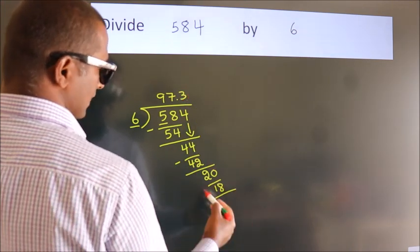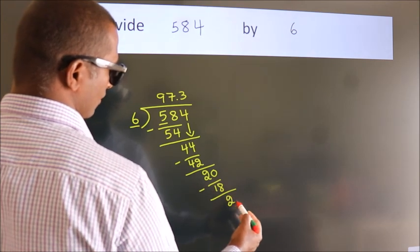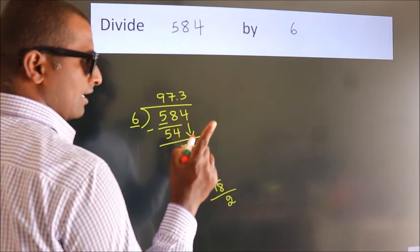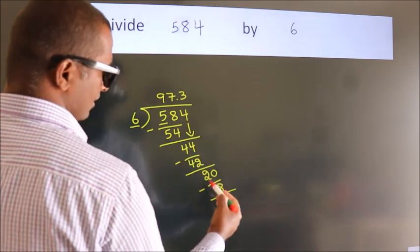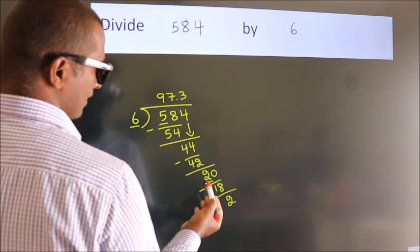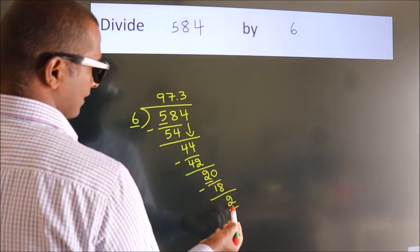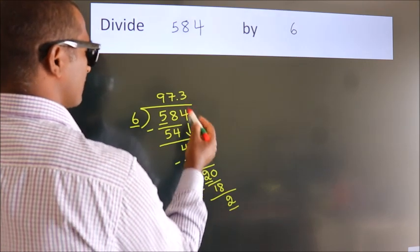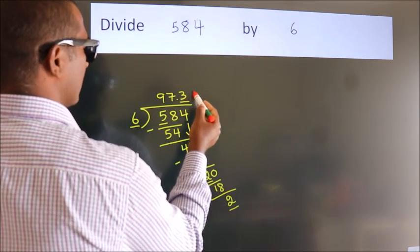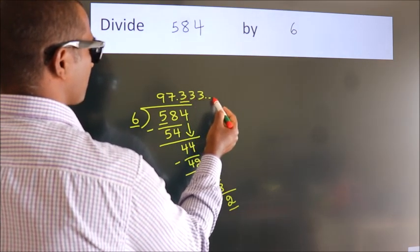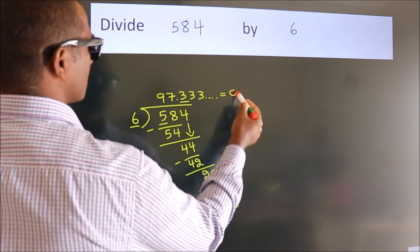Now we subtract. We get 2. Now you observe, we had 2 here and we got 2 again. That means this number keeps on repeating. So this is our quotient.